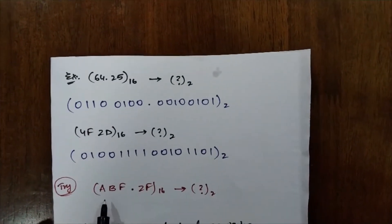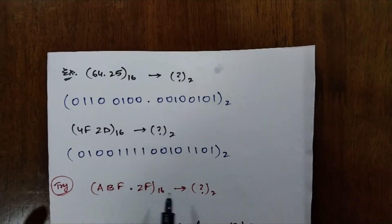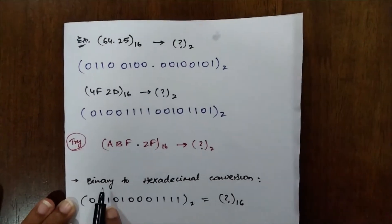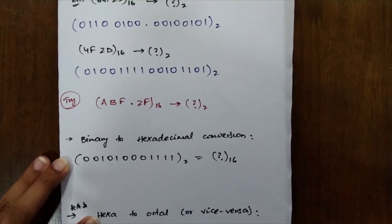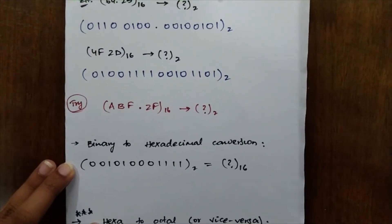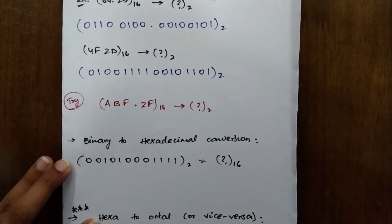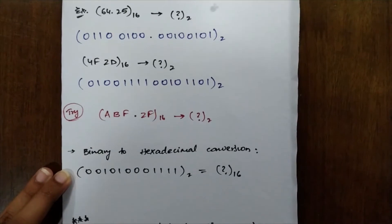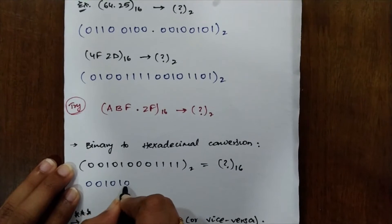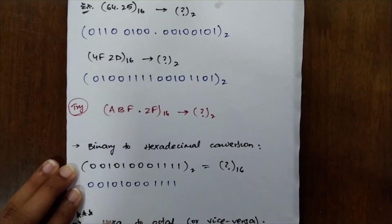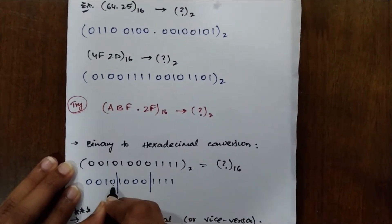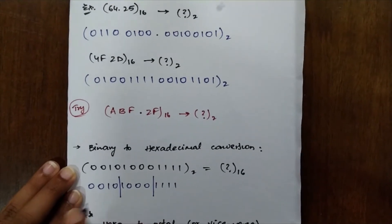I want you to try converting ABF.2 from hexadecimal into its binary form. Now coming to binary to hexadecimal conversion. As in binary to octal we group bits in threes, for hexadecimal we group into fours because 2⁴ equals 16. Start writing the bit string: 1001010000111111. Then divide into groups of four bits: 1111, 0001, 0100.